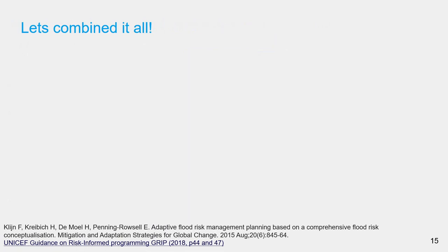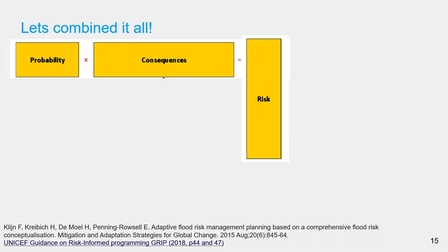There are many somewhat overlapping and hence confusing definitions of risk. It is the same concept, but different authorities and sources use slightly different, sometimes overlapping terms. The following diagram might help you disentangle these. The most basic definition is the multiplication of probability and consequence to obtain risk. Taking the example of the flood event inundating the refugee camp to a depth exceeding 1 meter, we assume the probability of this happening in a given year to be 5%, and the total monetary value of damage is established at 200,000 US dollars.